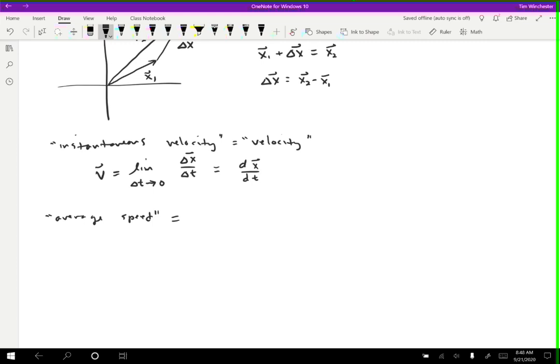What we talk about for average speed is just the total path length. So this can be the length of a race, for instance, divided by the time interval. So total distance divided by total time, and there's your average speed.